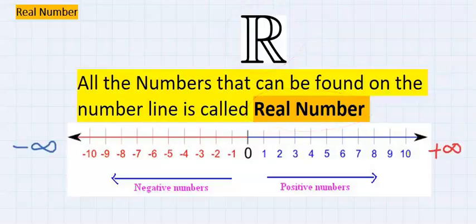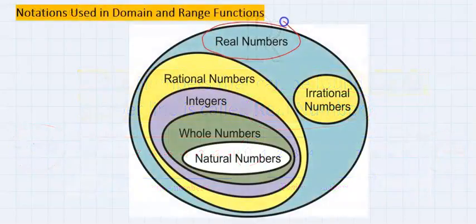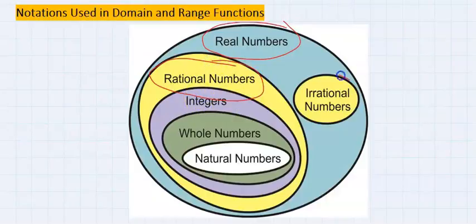Real numbers move towards negative infinity and positive infinity, including zero. Real numbers is the parent name for both rational numbers and irrational numbers.